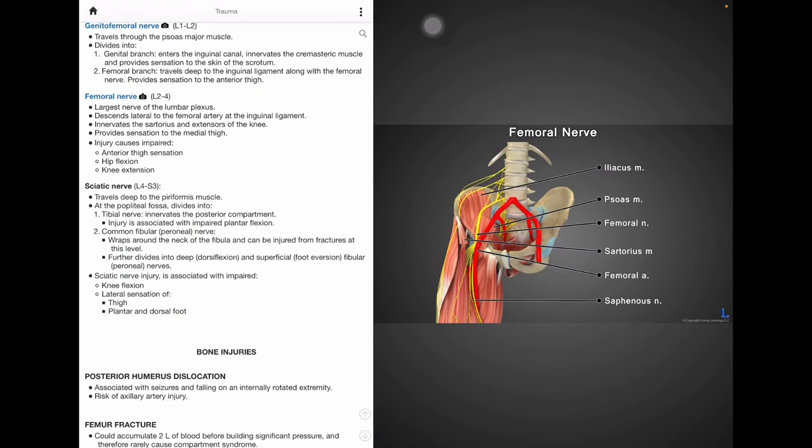Lastly, we have the sciatic nerve with roots L4 to S3 and the sciatic nerve travels deep to the piriformis muscle and divides into the tibial nerve and common fibular or peroneal nerve at the popliteal fossa. The tibial nerve innervates the posterior compartment and injury to this nerve impairs plantar flexion. The peroneal nerve wraps around the neck of the fibula and can be injured from fractures at this level. It further divides into deep and superficial fibular nerves for dorsiflexion and foot eversion respectively. Injury to the sciatic nerve can cause impaired knee flexion and lateral sensation of the thigh and plantar and dorsal foot.